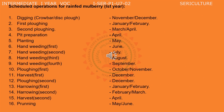Here are the scheduled operations for rainfed mulberry cultivation from the first year onwards. Cultural operations should be taken up regularly. Digging the soil with the help of crowbars is done in the months of November and December. First ploughing should be done in January and February. Second ploughing in March and April. Preparation of pits for plantation of cuttings should be done in April. The planting season should be in May.